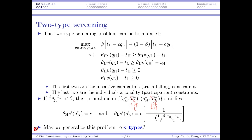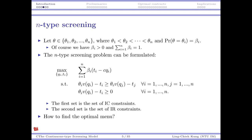Now we ask: can we generalize this problem to n types? No one says consumers would only be of two kinds — there may be more than two. In a general setting, theta may be of types theta_1, theta_2, up to theta_n, where theta_1 is smallest and theta_n is largest. Let beta_i be the probability that theta equals theta_i. The n-type screening problem is formulated with the expected profit given that all types choose the contract intended for them, subject to IC and IR constraints.